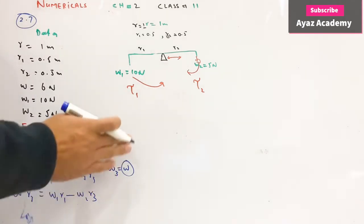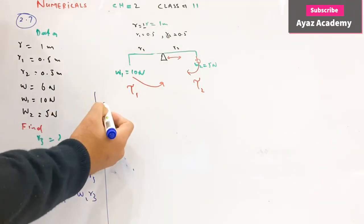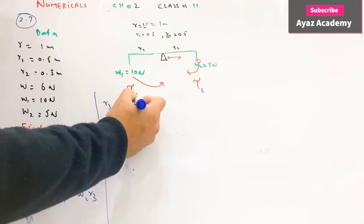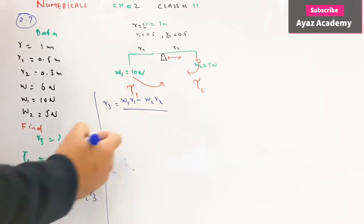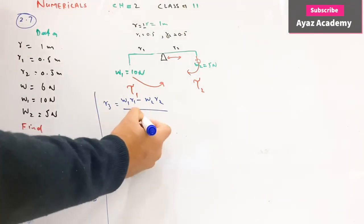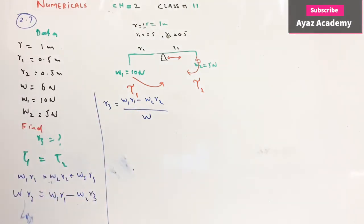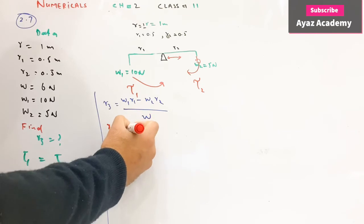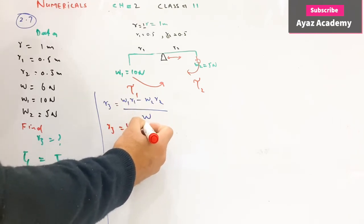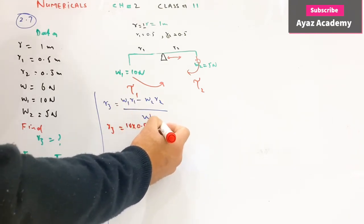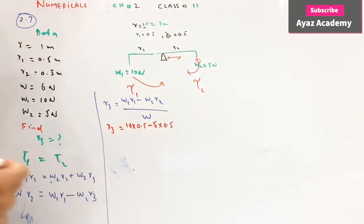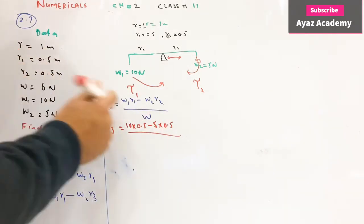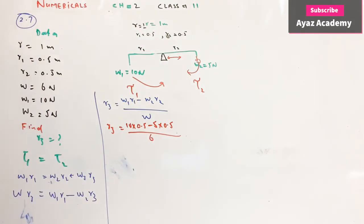Jo R3 hai, position R3 equal ho jayega weight 1 into R1 minus weight 2 into R2 divided by weight 3. R3 equal ho jayega. Weight 1 hai 10 multiply R1 hai 0.5 minus weight 2 hai 5 multiply R2 hai 0.5 divided by total weight kitna hai rod ki? 6 newton.